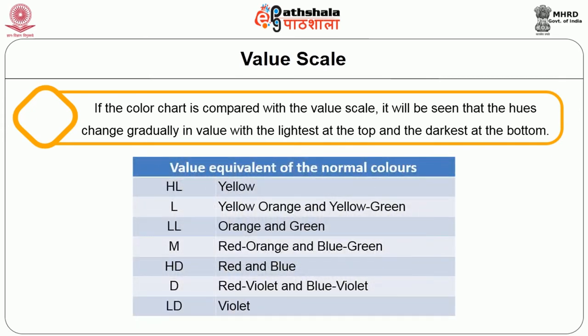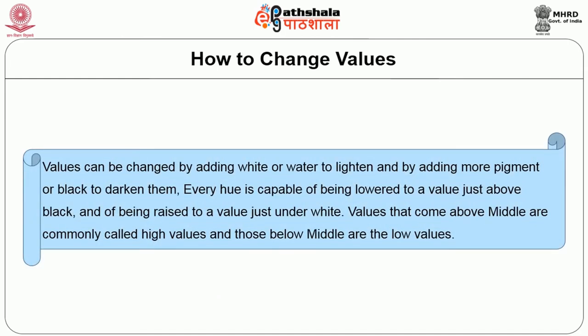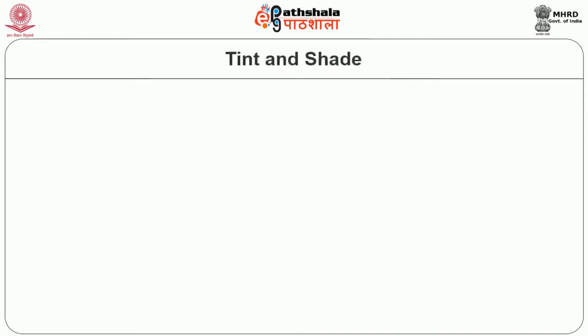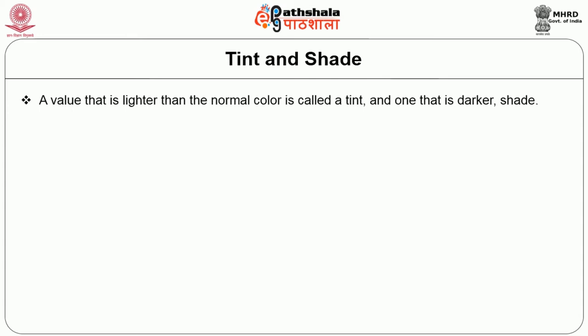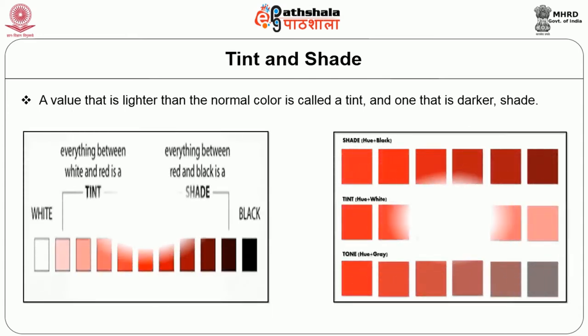The value equivalents of normal colors are: HL — yellow; L — yellow-orange and yellow-green; LL — orange and green; M — red-orange and blue-green; HD — red and blue; D — red-violet and blue-violet; LD — violet. Values can be changed by adding white or water to lighten, and by adding more pigment or black to darken. Every hue is capable of being lowered to a value just above black and raised to just under white. Values above middle are commonly called higher values; those below middle are low values. A value lighter than the normal color is called a tint, and one that is darker is called a shade.